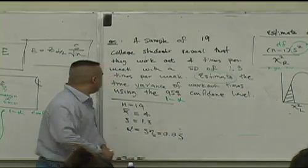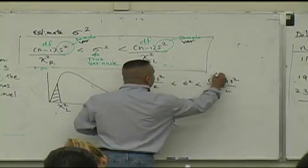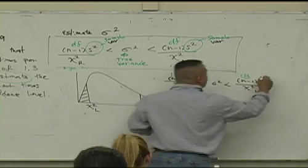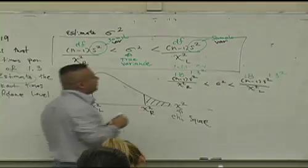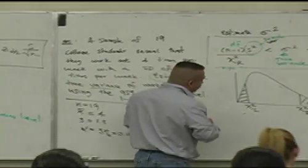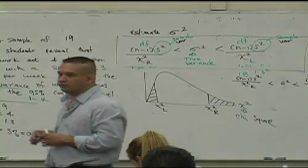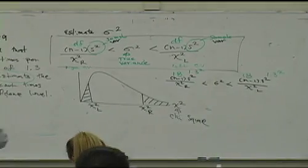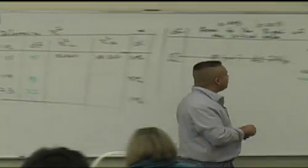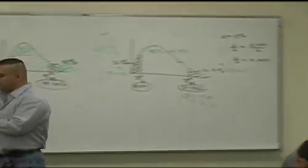So go to the format. If n is 19, what's n minus 1? 18. What is s squared? Good. 1 point what? 3 squared. 1.3 squared. Chi square L and chi square R. Chi square L, chi square R. Wow, how do we do that? Ah, I think we did it. Where was it? Wasn't it right here? What was it?